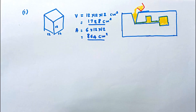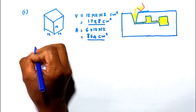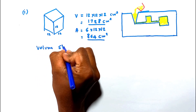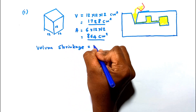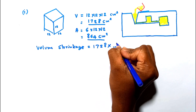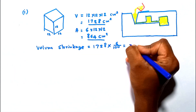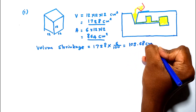For Part 1, the volume shrinkage is 6% for aluminium. So the shrinkage volume is equal to 6% of 1728 cm³, which equals 103.68 cm³. This completes the first part of the problem.